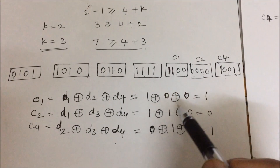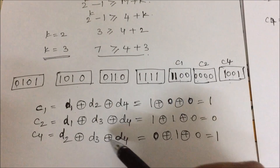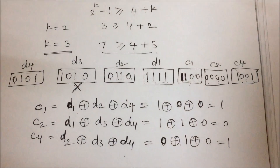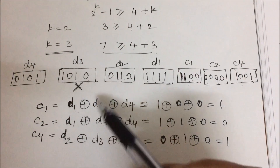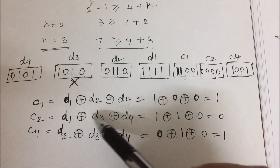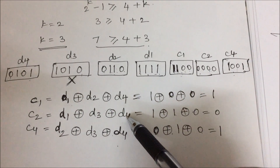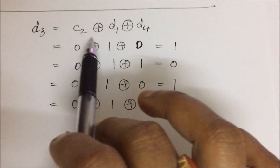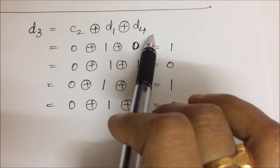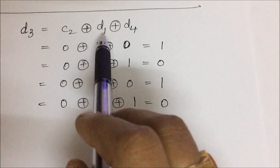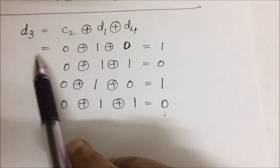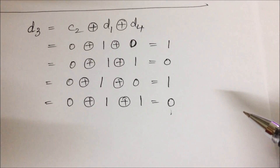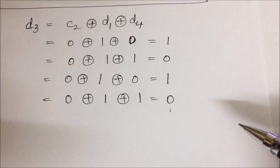If we want to recover a particular failed disk, one of the check bit formulas is enough. Let us consider that D3 is in error. D3 can be recovered using the C2 formula: C2 = D1 XOR D3 XOR D4, rearranged as D3 = C2 XOR D1 XOR D4. Substituting the values of C2, D1 and D4, we get 1010, which is the original D3 value. This is how data recovery takes place in RAID level 2.